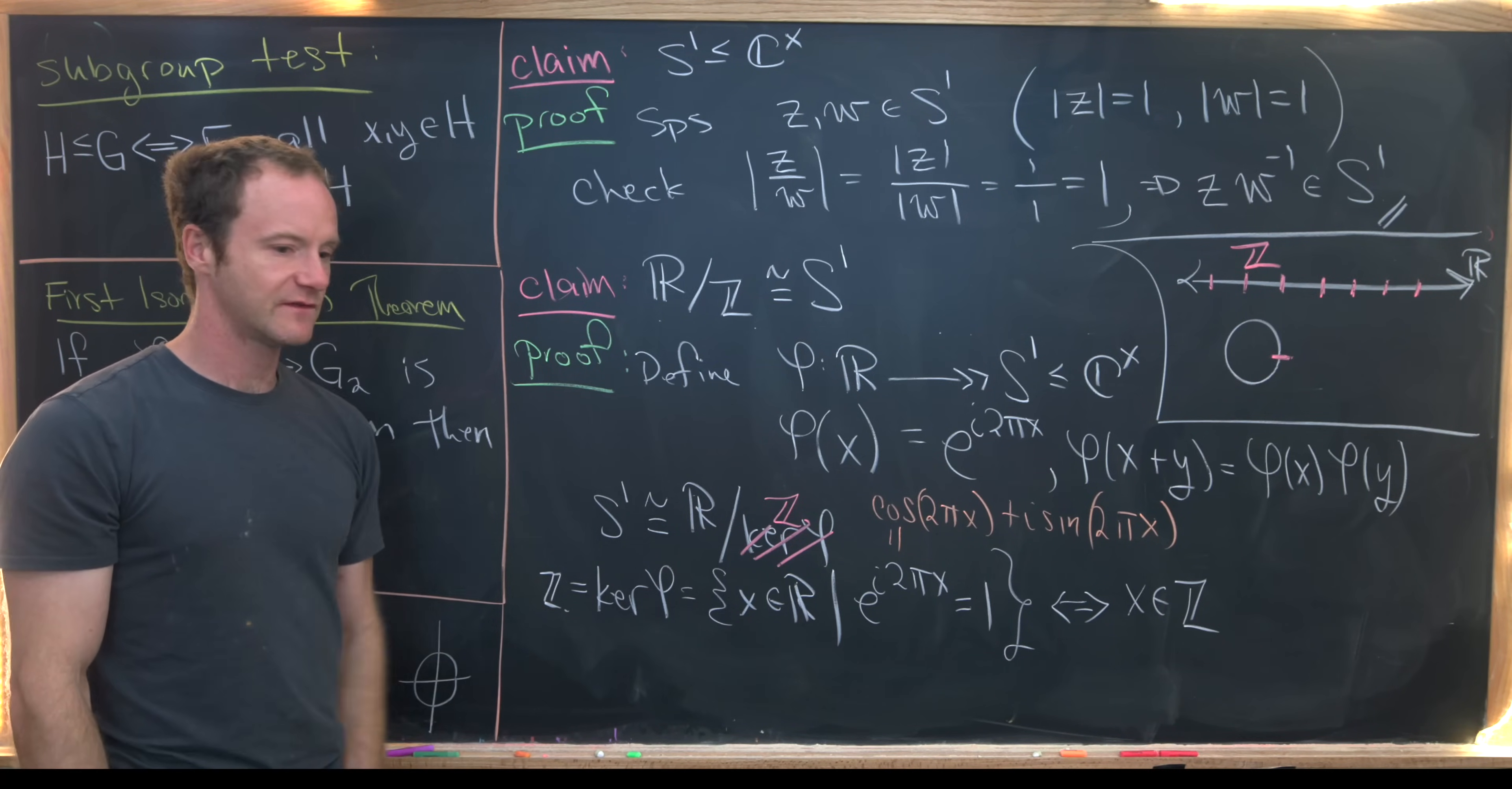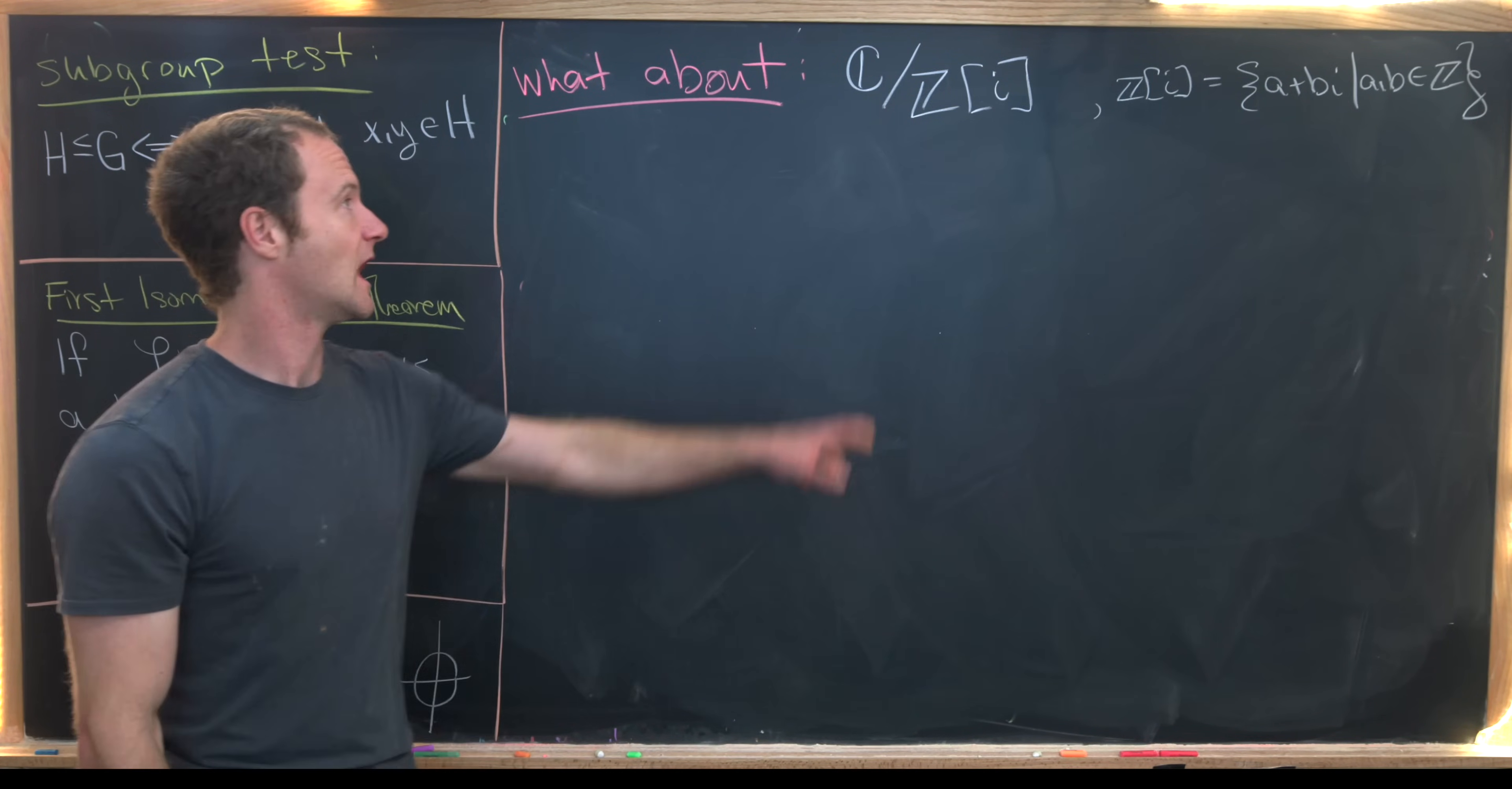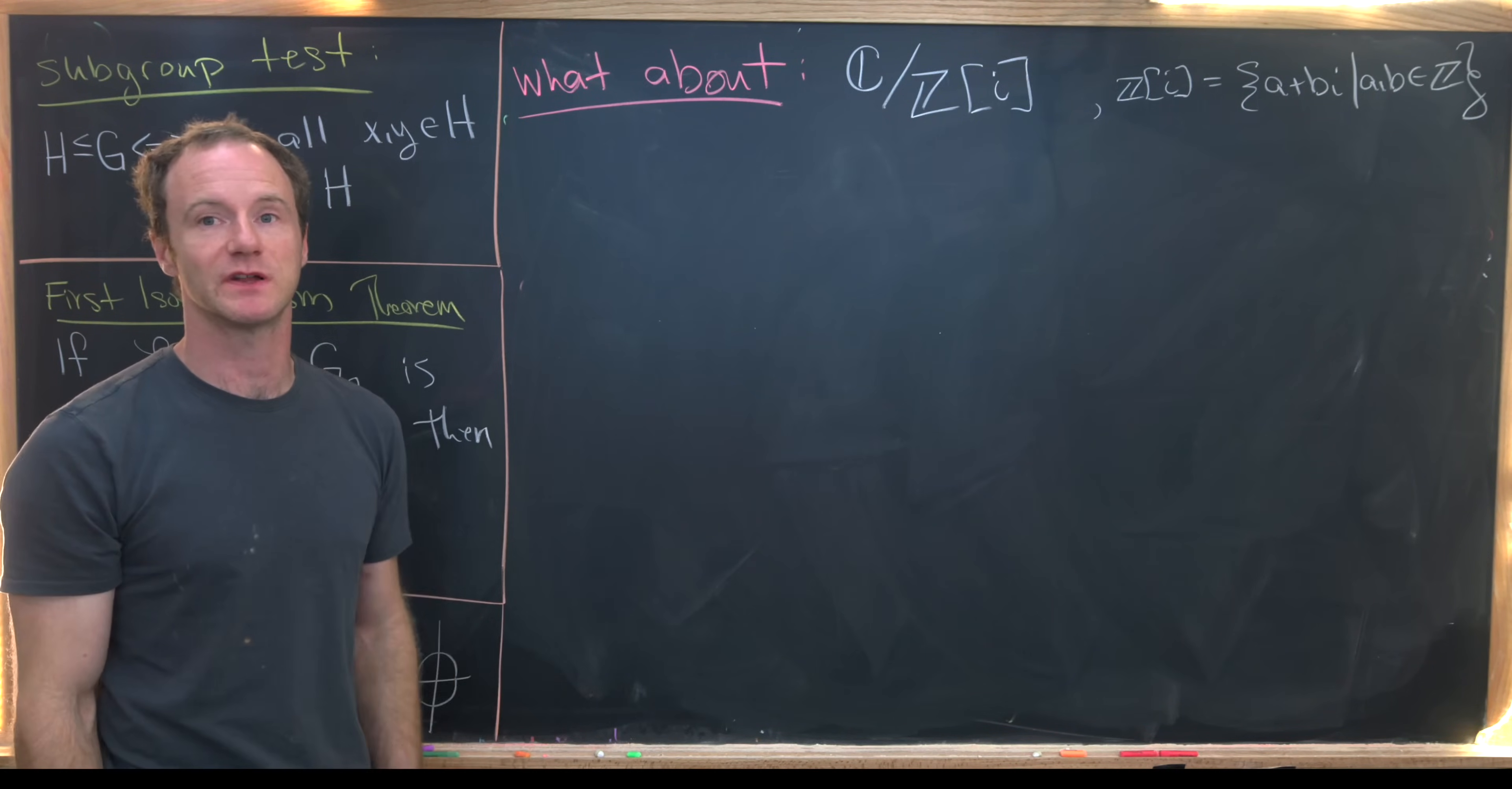Now, I want to look at something a bit higher dimensional. So instead of taking R mod the integers, I want to take the complex numbers additively and mod out the Gaussian integers. So that's Z adjoin i. So we'll recall that Z adjoin i or the Gaussian integers are the form a plus bi where a and b are integers.